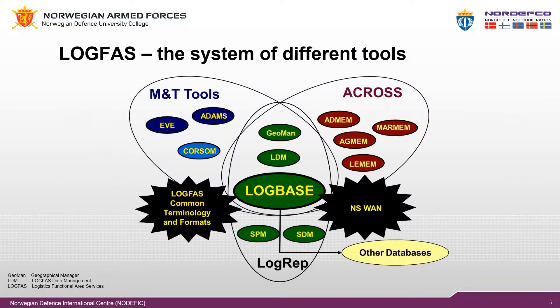LogFast is a system built up of several individual systems. On one side, the system for movement and transportation, and on the other side are the systems for logistics in an operation. We will in this presentation only mention a few of all the different systems that are included in LogFast.